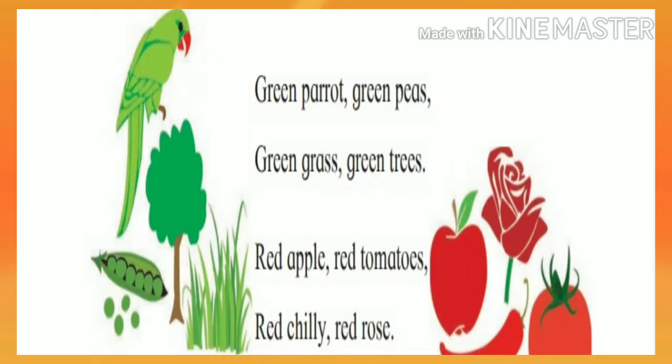In that, the poem is given here, you see. Some objects are given — vastu, prani, pashu, pakshi (things, creatures, animals, birds). They are given different colors. From those colors, we recognize the objects. Green parrot, green peas, green grass, green trees — parrot is green.